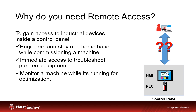Remote access is used to gain access to industrial devices inside of a control panel. Engineers can stay at a home base while commissioning a machine, allowing them to do more with less time. They can also get immediate access to troubleshoot problem equipment — no need to hop on a plane. Some even use this access to monitor a machine while it's running for optimization.